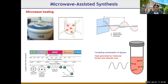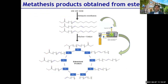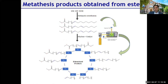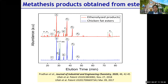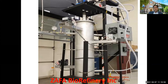We used microwaves to convert different lipids — chicken fat, canola oil, and waste cooking oil — producing methyl esters and then converting them into products via microwave-assisted metathesis. Products include terminal hydrocarbons, internal hydrocarbons, and esters used in a variety of applications. GCMS analysis shows the chicken fat before and after ethenolysis, confirming the expected product distribution. Based on this process, we started a spin-off company.